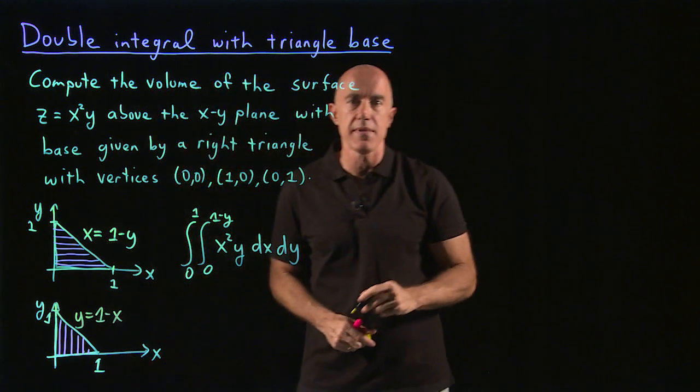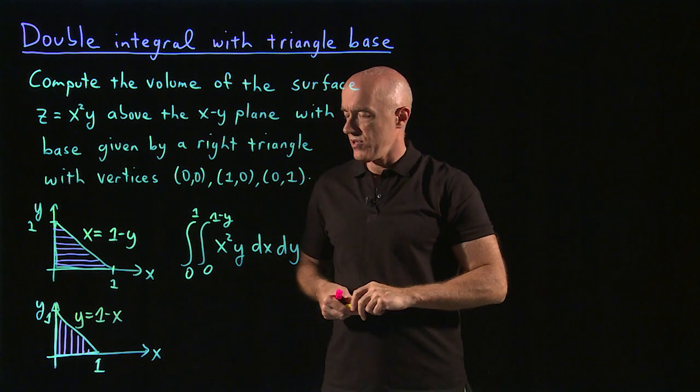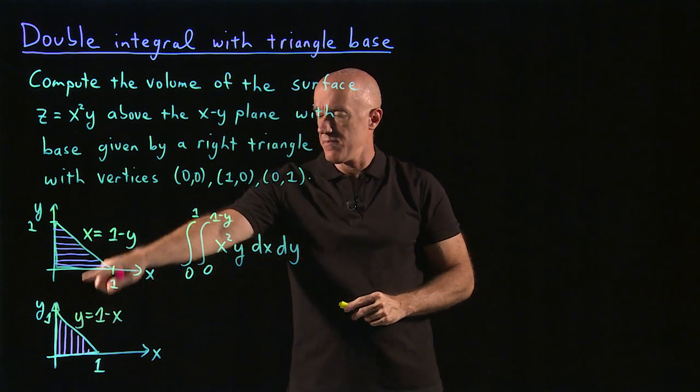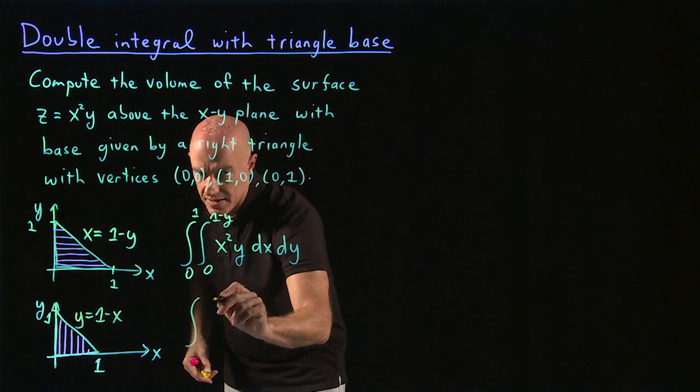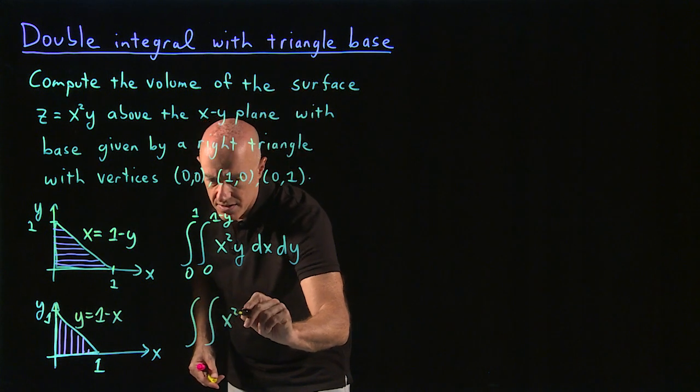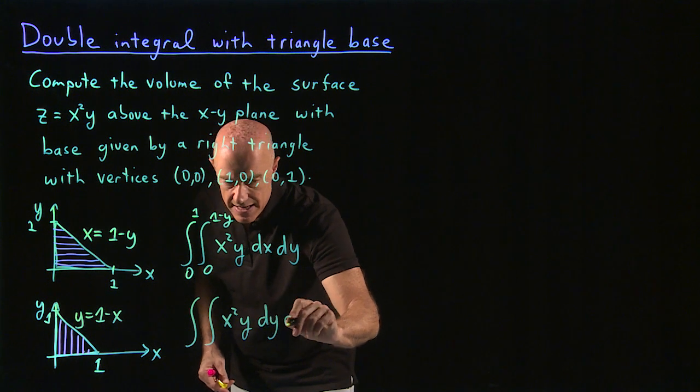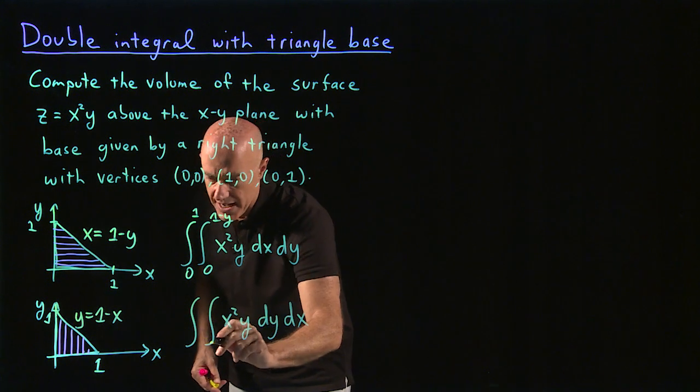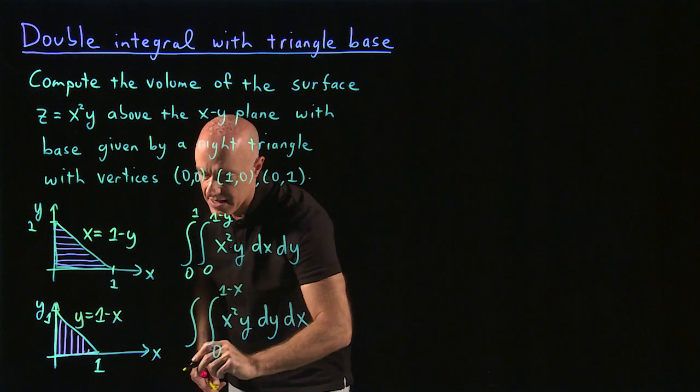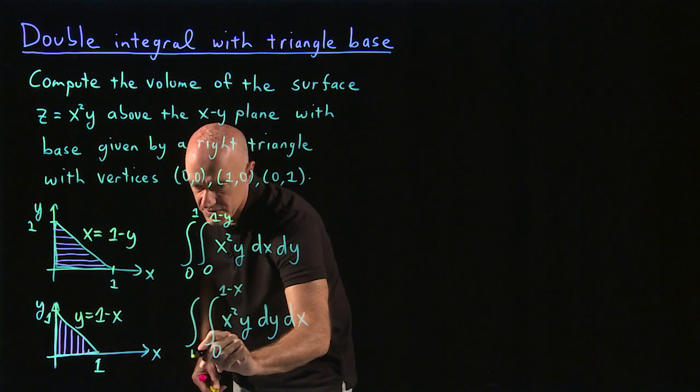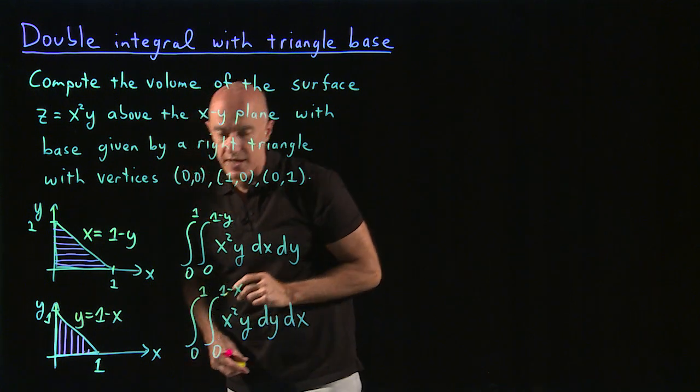Sometimes it won't be so symmetrical, but you need to specify the limits of the y integration. So here we're integrating x squared y, first dy and then dx. And the y limit is from 0 to 1 minus x and the x limit then goes from 0 to 1.